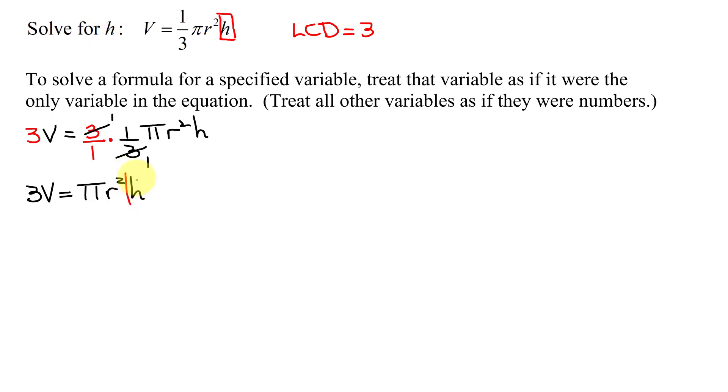Now remember, we're solving for h, so I need to get h all by itself on one side of the equation. How are the pi and the r squared attached to the h? They're attached by multiplication, so we're going to undo that by dividing both sides by pi r squared.